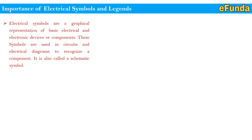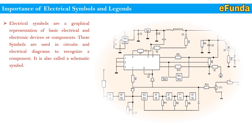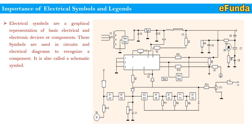Importance of Electrical Symbol and Legend. Electrical symbols are a graphical representation of basic electrical and electronic devices or components. These symbols are used in circuits and electrical diagrams to recognize a component, and are also called schematic symbols. One can refer to the picture where you can see the schematic diagram with various symbols, which may be difficult to identify without experience. This topic will be helpful to understand the different types of symbols used in electrical discipline.